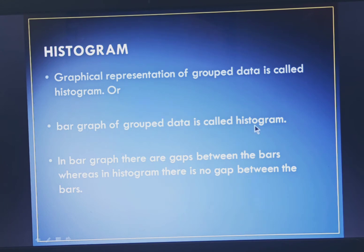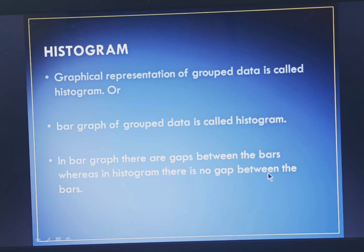Now what is the difference between a bar graph and a histogram? In a bar graph there are gaps between the bars, whereas in a histogram there is no gap between the bars. Now let us see a few examples of histograms.